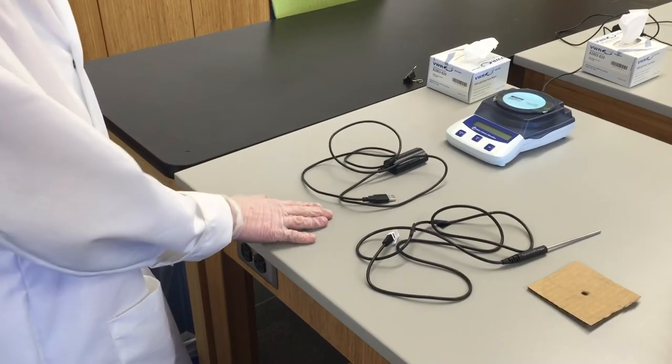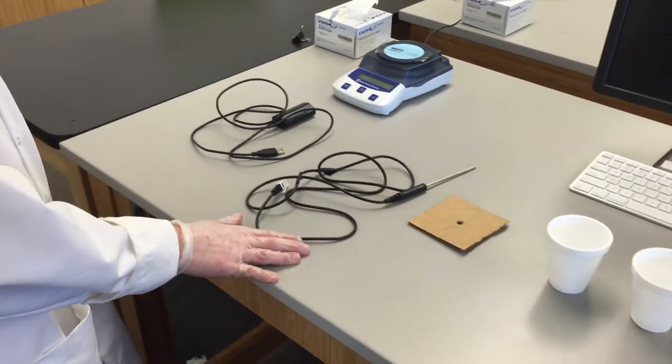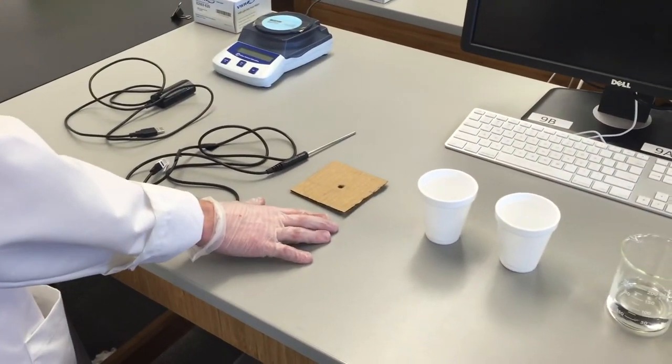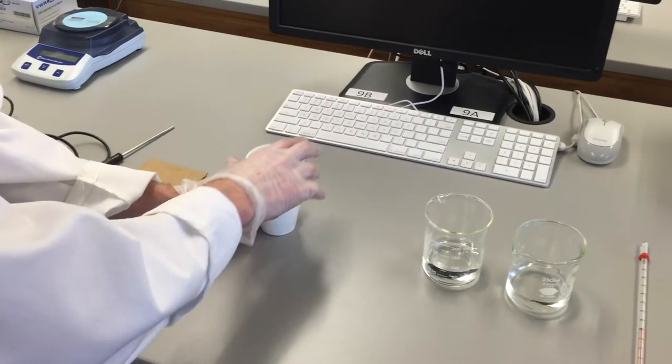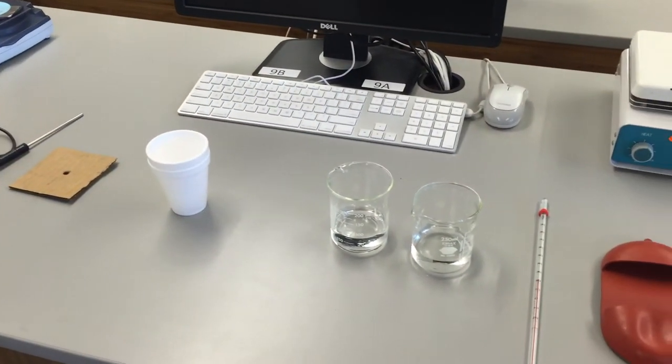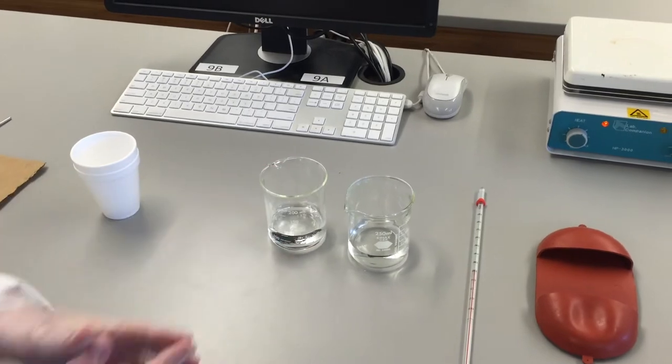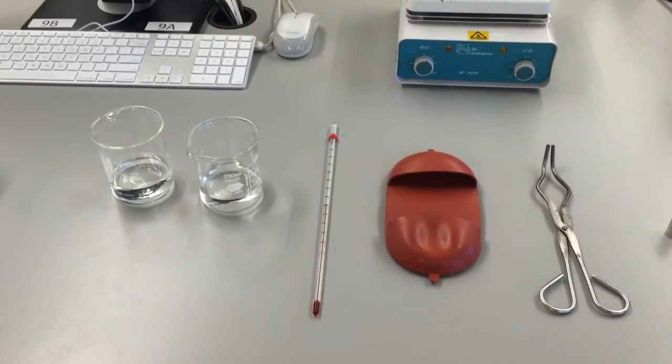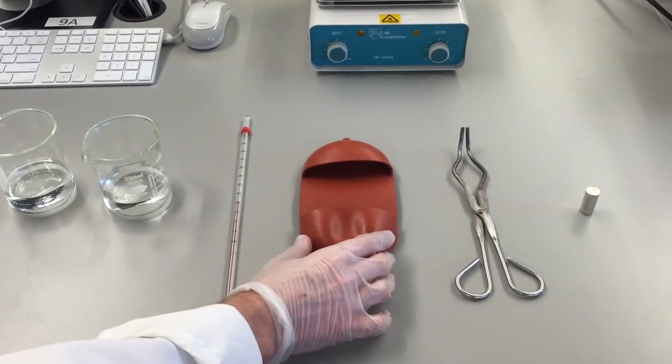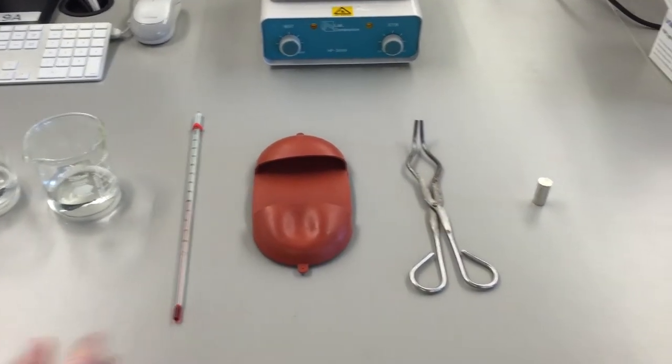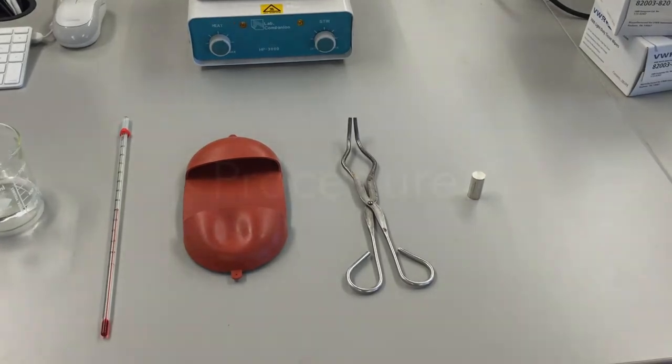The materials we will need today are a USB adapter, a temperature probe, a lid, two styrofoam cups that will stack on top of one another to make our calorimeter, a beaker of cold water, a beaker of hot water, an alcohol thermometer that we'll use to measure the temperature of the hot water, some hot pads to hold the hot water beaker, forceps, and an unknown metal.